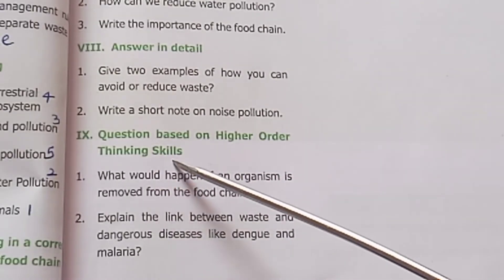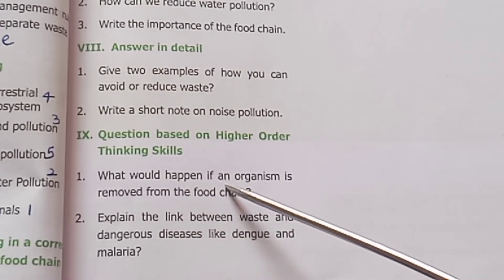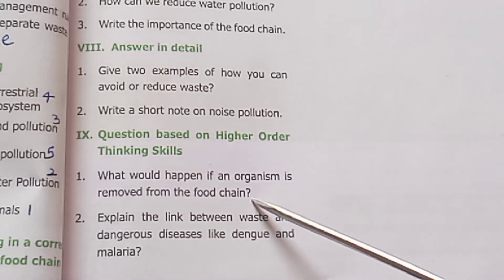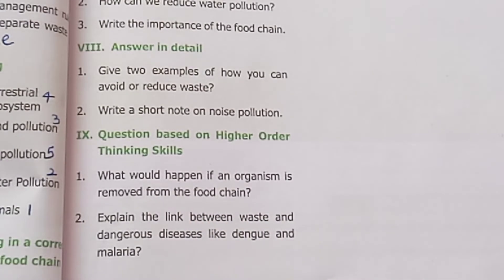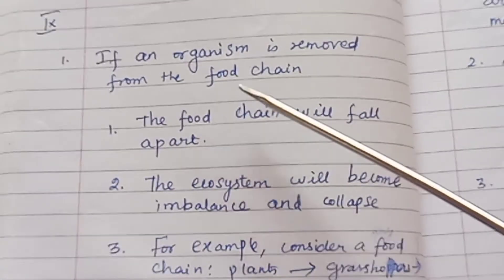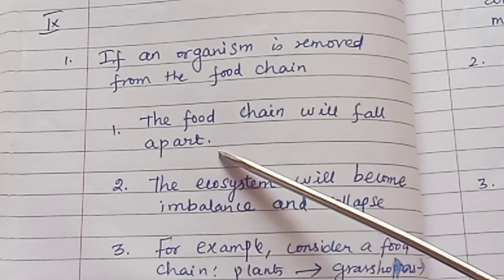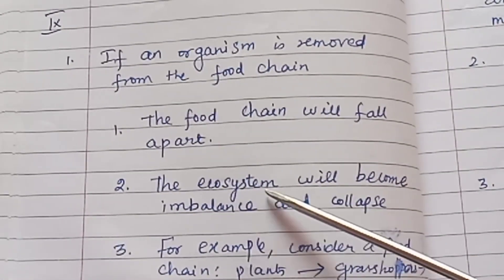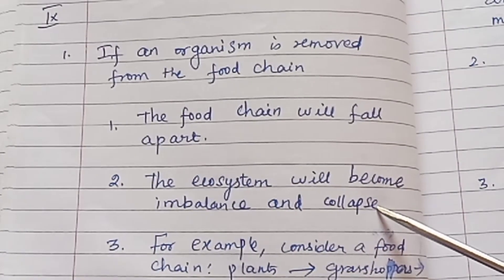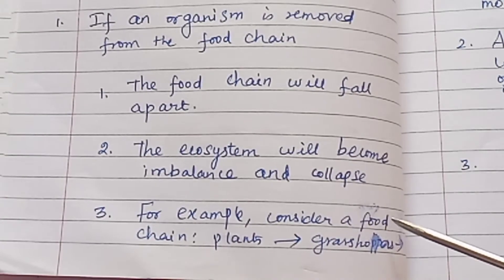Question based on higher order thinking skills: What would happen if an organism is removed from the food chain? If an organism is removed from the food chain, the food chain will fall apart. The ecosystem will become imbalanced and collapse.